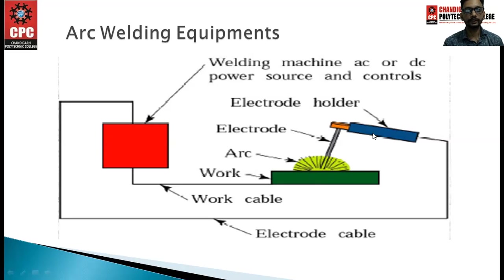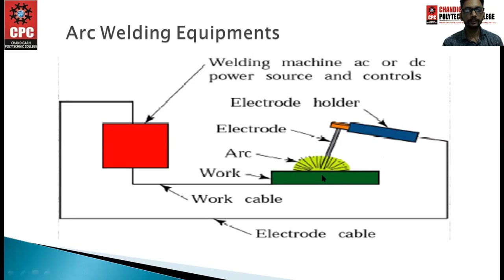If the sign changes — positive given to the workpiece and negative given to the electrode — we have reverse polarity. In reverse polarity we have less heat, and in forward polarity we have high heat. The electrode holder holds the electrode, and the arc is produced between the workpiece and electrode.